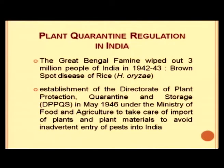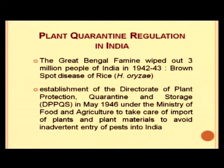One of the main precursors for establishing the DPPQS was the Great Bengal Famine, which wiped out 3 million people in 1943, with brown spot disease of rice cited as a reason. The government decided to establish the Directorate of Plant Protection Quarantine and Storage, which was set up in May 1946 under the Ministry of Food and Agriculture to regulate import of plants and plant materials and avoid inadvertent entry of pests into India.